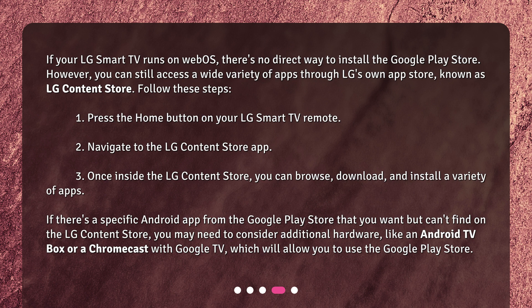Follow these steps: Press the Home button on your LG Smart TV remote, then navigate to the LG Content Store app. Once inside the LG Content Store, you can browse, download, and install a variety of apps. If there's a specific Android app from the Google Play Store that you want but can't find on the LG Content Store, you may need to consider additional hardware, like an Android TV box or a Chromecast with Google TV, which will allow you to use the Google Play Store.